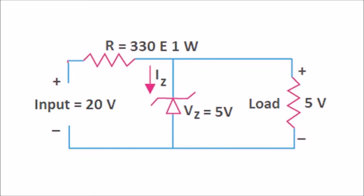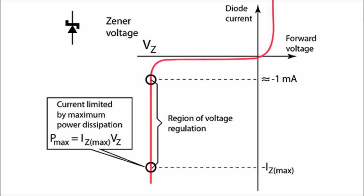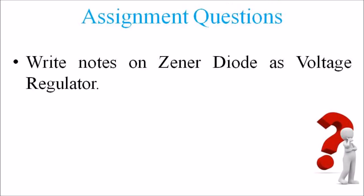In this lecture we have discussed the voltage regulator feature of a Zener diode. As we mentioned, if we want the voltage across a circuit to not exceed a particular limit, we can use a Zener diode. Hope you have understood this topic. Kindly go through the assignment question: write notes on the Zener diode as a voltage regulator.